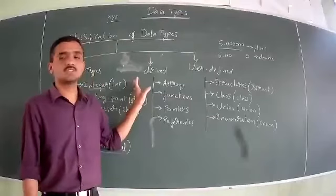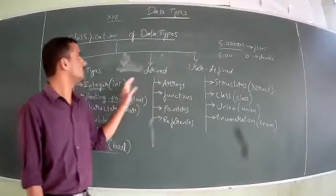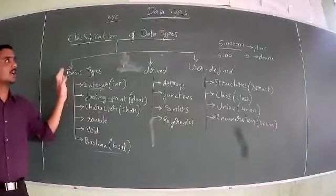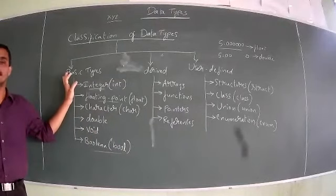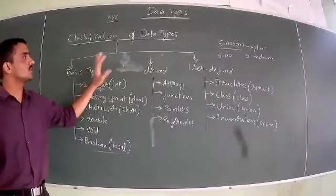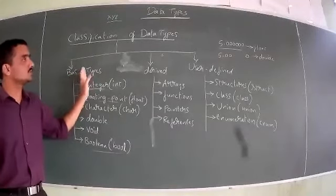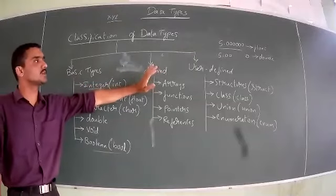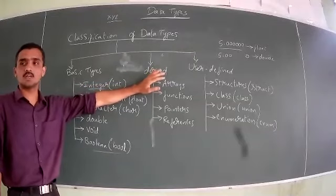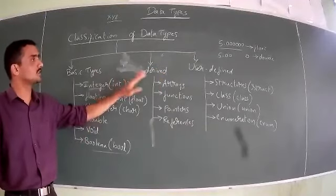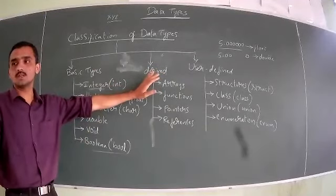So this is our classification of data types. To summarize: data type is defined as the type of the data or a value that the variable can store within a program. When it comes to the classification of data types, we have three main categories: basic types, derived types, and user-defined types.